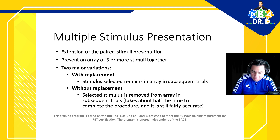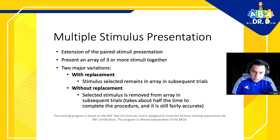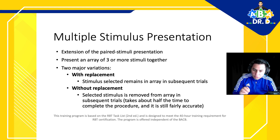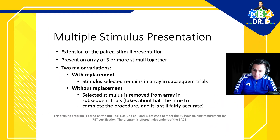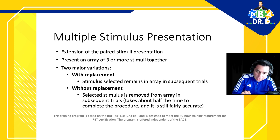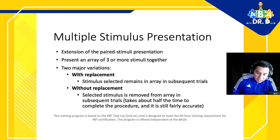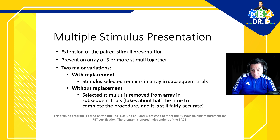We cover multiple stimulus with replacement in one of our other videos. In this particular one we're going to focus once again on MSWO. This is an extension of the paired stimuli presentation — we present an array of three or more stimuli together. There are two major variations: with replacement, where the selected stimulus remains in the array, and without replacement, where the selected stimulus is removed. Without replacement takes about half the time and is still fairly accurate, making it a much faster method.